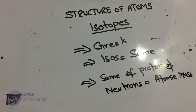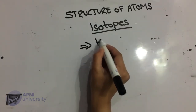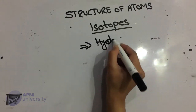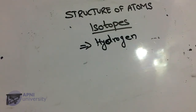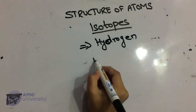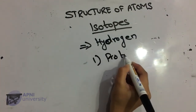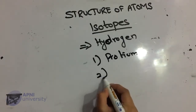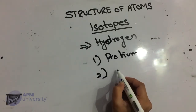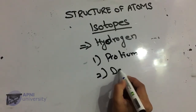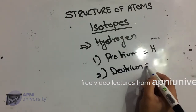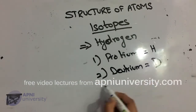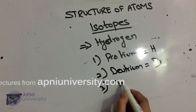Now we come to examples of isotopes. First, we discuss the isotopes of hydrogen. Hydrogen has three isotopes: the first one is protium, represented as H; the second is deuterium, represented as D; and the third is tritium, also represented as T.